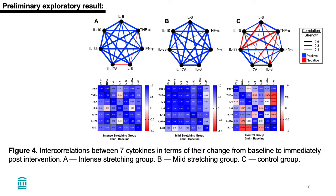In Figure 4, we first calculated the magnitude of changes from baseline to immediately post-intervention in seven cytokines identified as the most informative ones. We then correlated them, and the upper panel depicts the correlation strength between these cytokines in each group. In both stretching groups, we found more positive correlations between the cytokines compared to the control group.